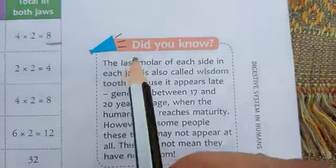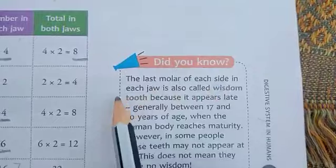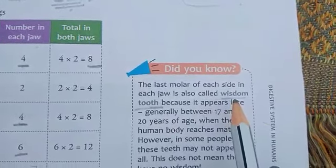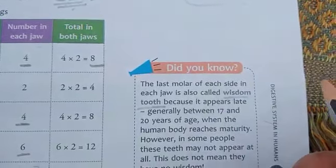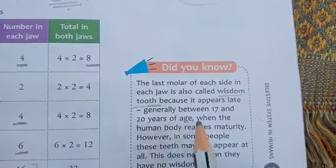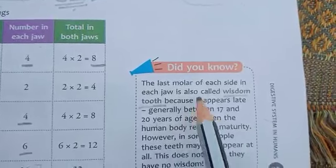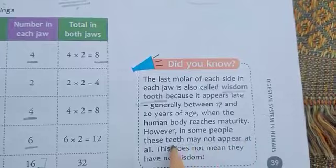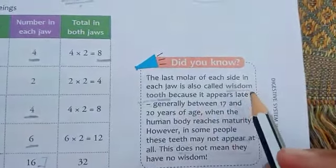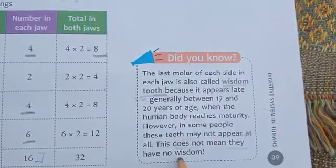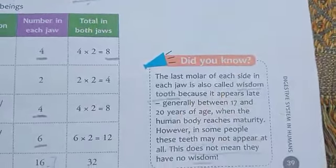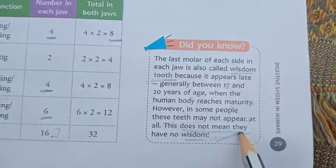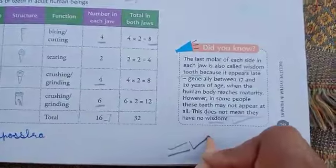As a fun fact, the last molar on each side in each jaw is called the wisdom tooth. Wisdom teeth appear when we are mature, around 17 to 23 years of age. In some people they don't appear at all — but that doesn't mean those people lack wisdom! That's a fun fact to remember.